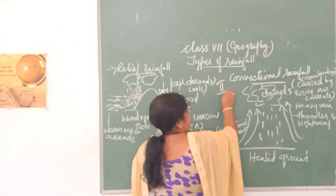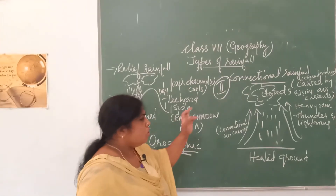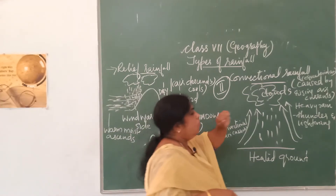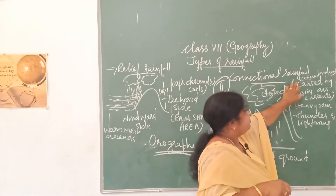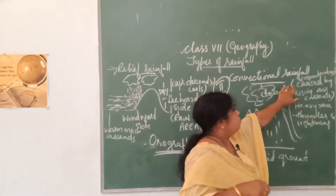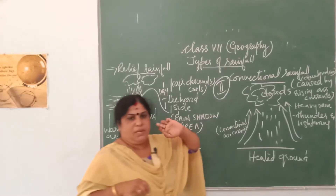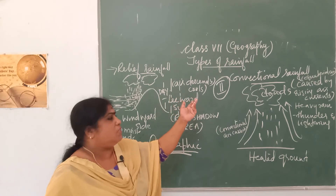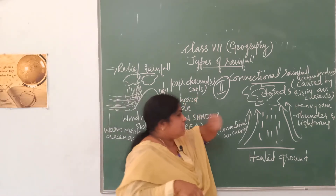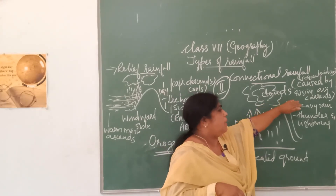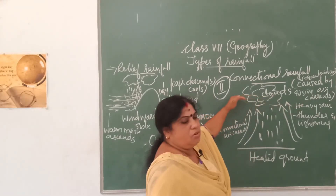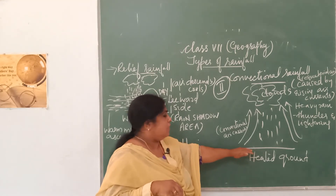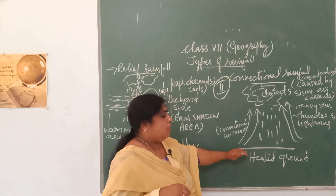The next type of rainfall is convectional rainfall. Convectional rainfall usually occurs in equatorial regions — areas which are very hot. In these hot areas, the temperature is very high and the air also becomes hot. This hot air rises up towards the atmosphere. Convectional rainfall is caused by rising air currents. In equatorial regions, the rays of the sun fall directly over these regions, making them very hot.